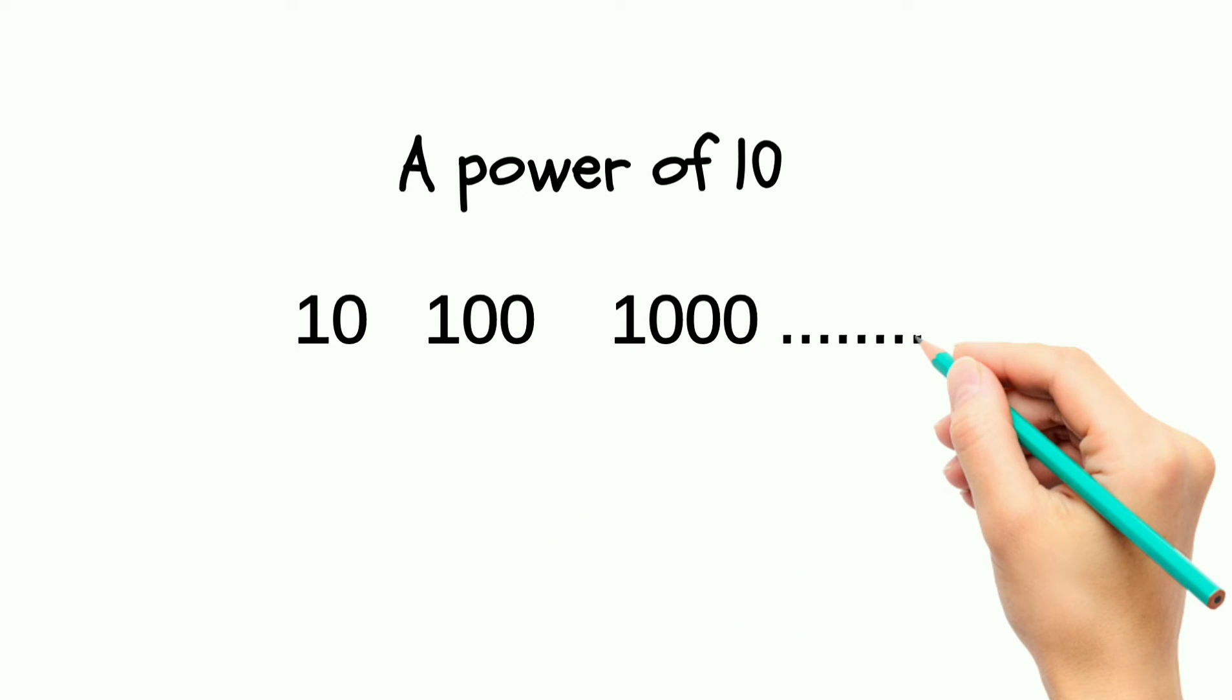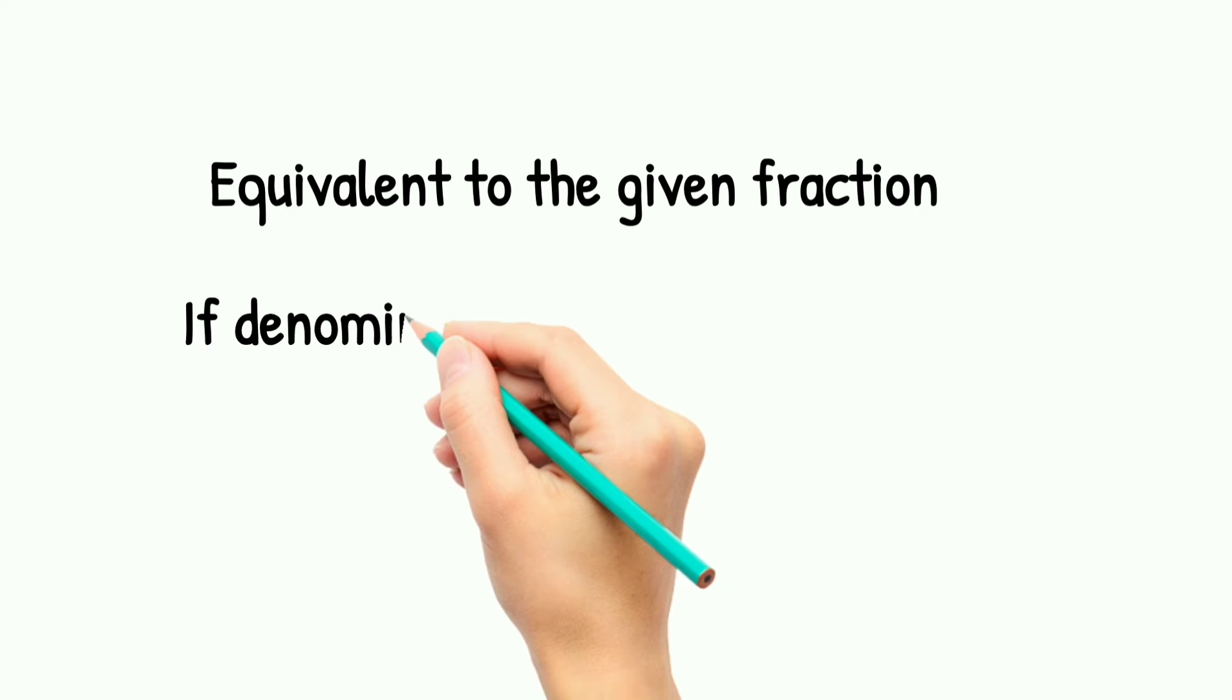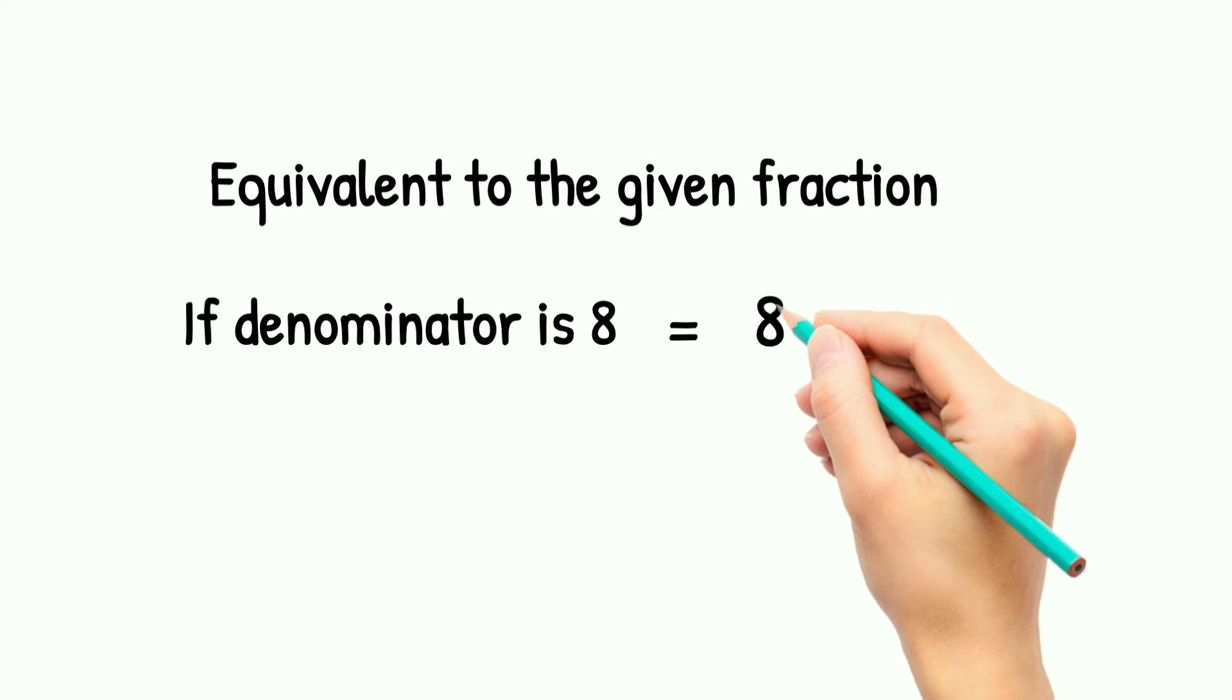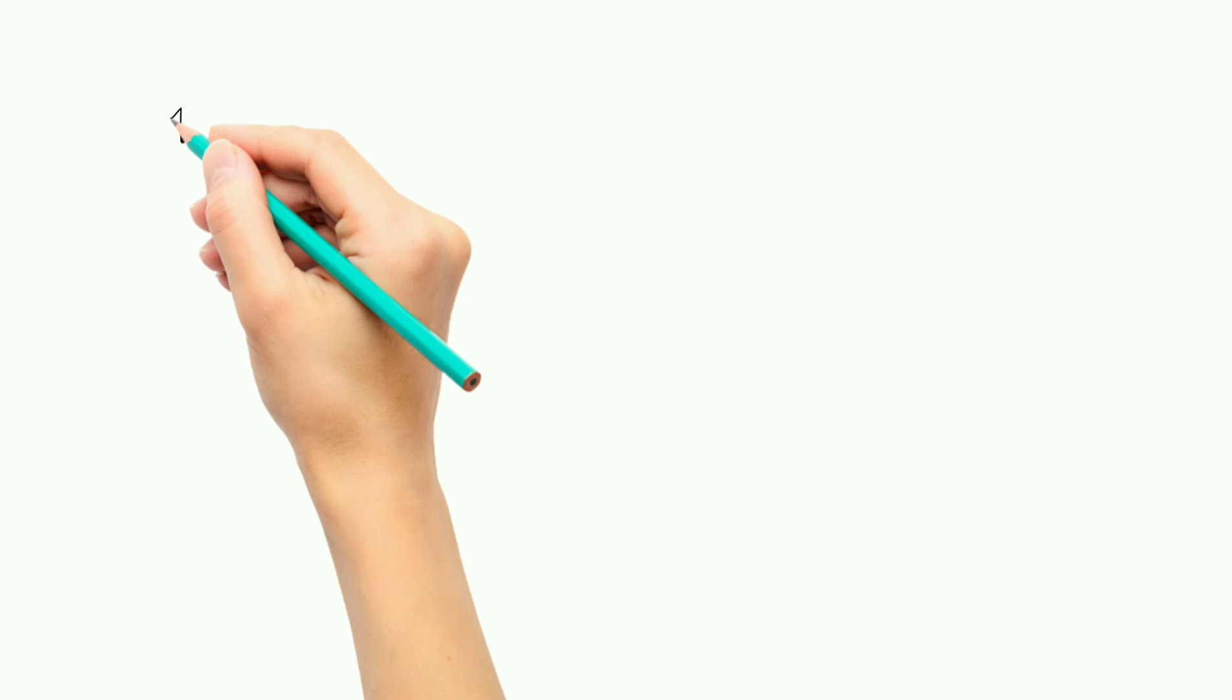10's any power that is 1, 2, 3. That is 10, 100, 1000 and many more powers. The second thing we have to know is what is equivalent to the given fraction. With an example, if the denominator of any fraction is 8, then we have to multiply it with 125. That 8 has a capability to make 1000 by multiplying with 125. Get the 10's third power with 8.